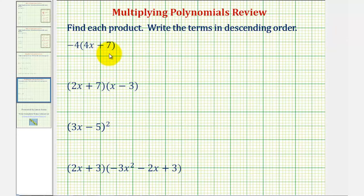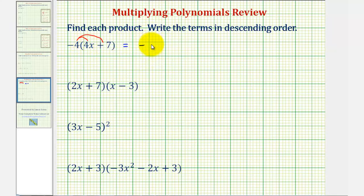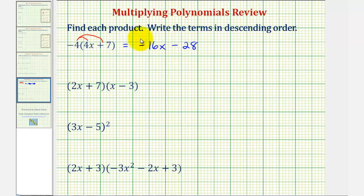We want to find each product and write the terms in descending order. We first have negative four times the quantity four x plus seven. To find this product we distribute the negative four, so we'll have negative four times four x plus negative four times seven. Negative four times four x would be negative sixteen x, and negative four times seven would be minus twenty-eight. These terms are in descending order because the x term has degree one and the constant term has degree zero.